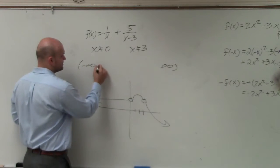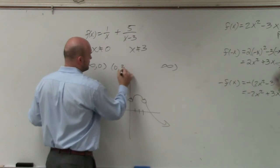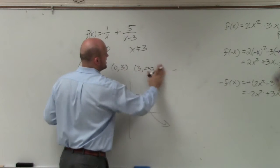So from negative infinity to 0, it's continuous. From 0 to 3, it's continuous. And from 3 to infinity, it's continuous.